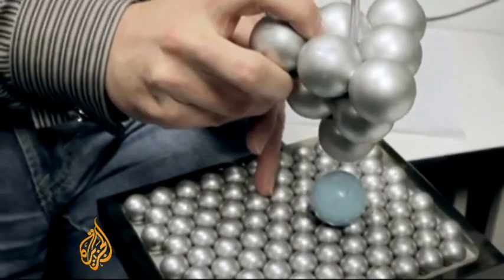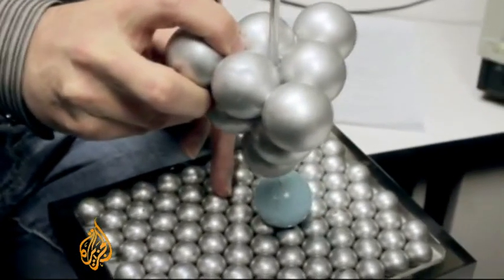So we start to form a bond such that the atom follows the tip around on the surface. We can drag it to a new spot. When we withdraw the tip it holds still because the surface is holding it in place and we can take an image and see where we've placed this atom.